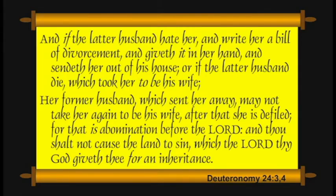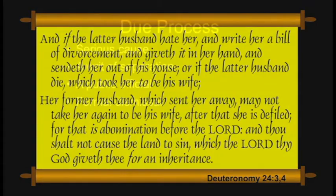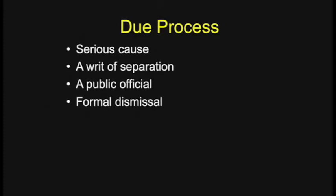'When she is departed out of his house she may go and be another man's wife. If the latter husband hate her and write her a bill of divorcement, or if the latter husband die, her former husband which sent her away may not take her again to be his wife after that she is defiled — for that is an abomination before the Lord.' What appears to be the tone here is God is looking for stability. There's an acknowledgement that there will be divorce because of the hardness of their heart — even Jesus comments on that — but there's still an order called for here.